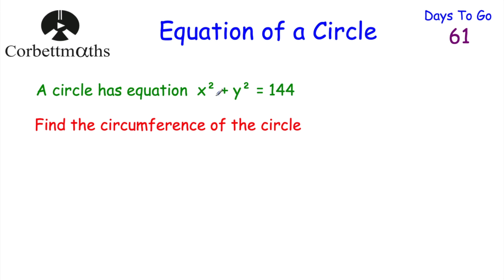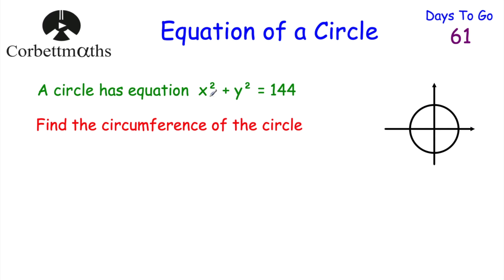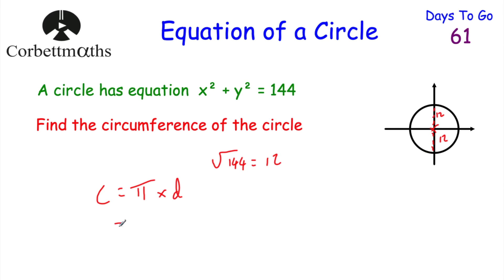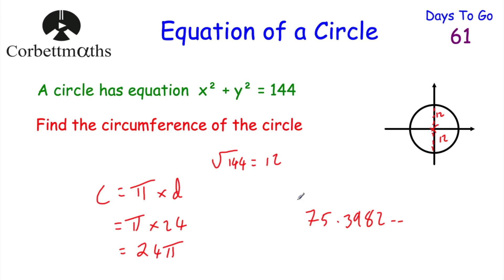Next question: a circle has equation x squared plus y squared equals 144, and we've been asked to find the circumference. The square root of 144 is 12, so the radius is 12. The circumference is π times the diameter. The diameter is 24, so the circumference is π times 24, which equals 24π — or approximately 75.398 as a decimal.